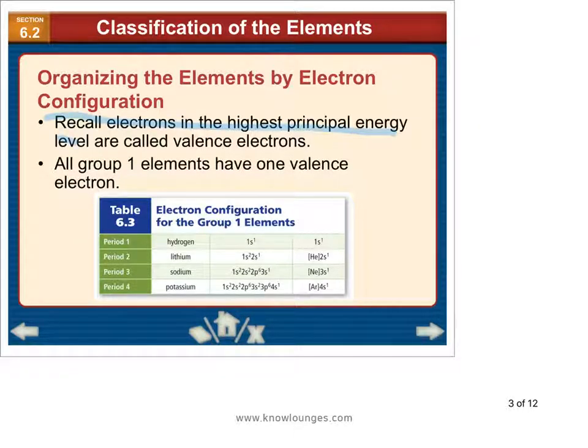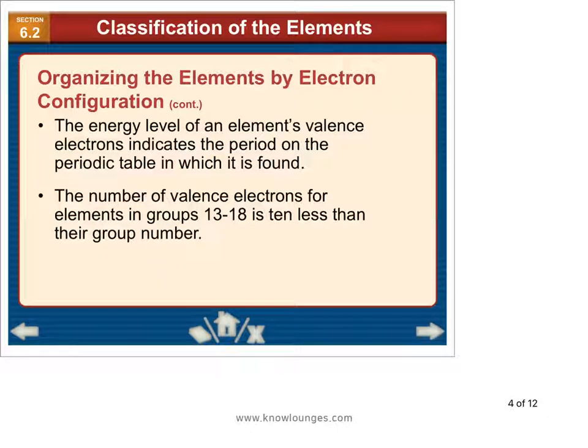Electrons in the highest principal energy level are called valence electrons. All group 1 elements have one valence electron. Energy level of the valence electrons indicates the period in which it's found. We've looked at this. If its valence electrons are in energy level 2, it's going to be in period 2.